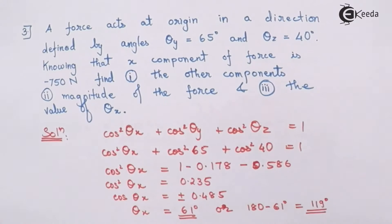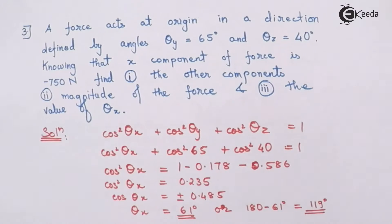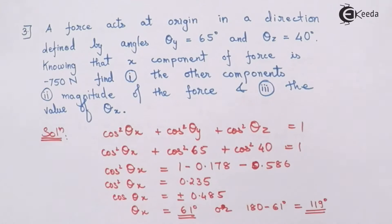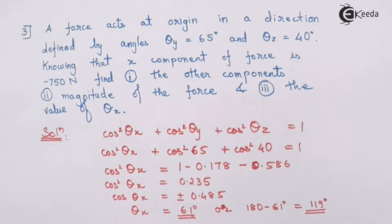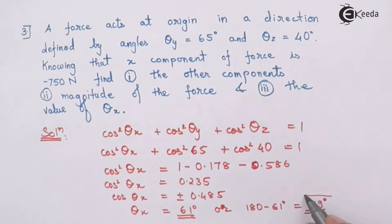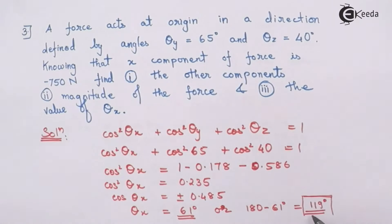Now I have got the angle for the x-axis. The important point here is: if I take the x-axis angle as 61 degrees, then the magnitude should come out as positive. But the component given to us is negative, which means the angle is definitely greater than 90 degrees. That is why we select 119 degrees as the angle with respect to the x-axis.